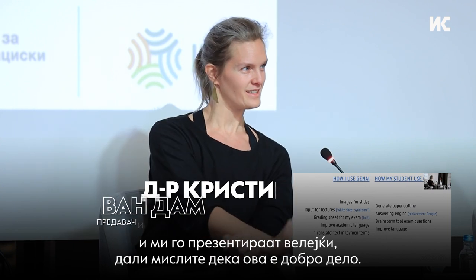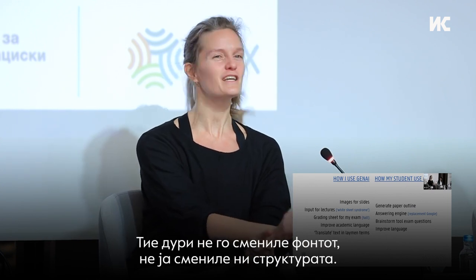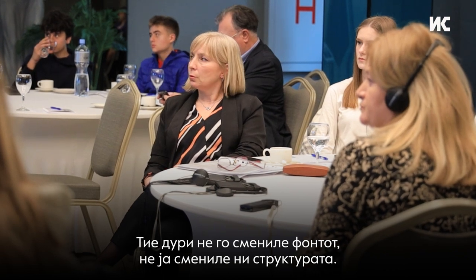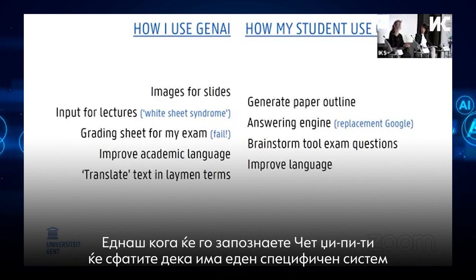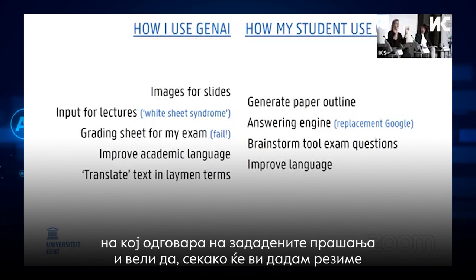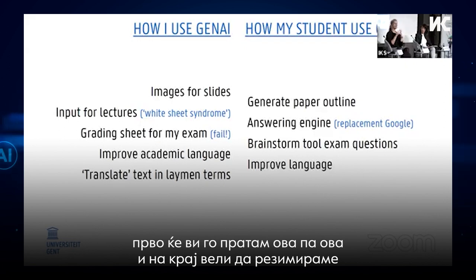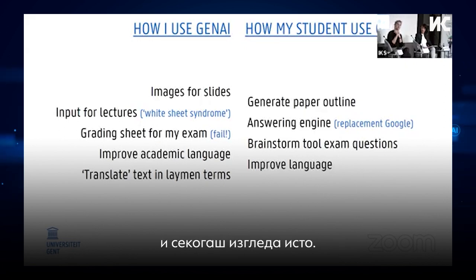When I look at what my students are doing, I have students who literally copy-paste the outline of a paper and send it to me like, do you think this is a good paper? They didn't even change the font, they didn't even change the structure. Once you get to know ChatGPT, it always has a specific system on how it answers — of course I can give you an outline, first talk about this and that, and then at the end to summarize, you should also take into account — it always has the same output.